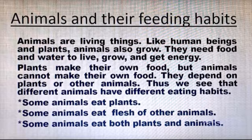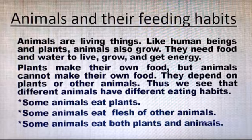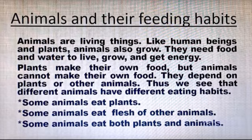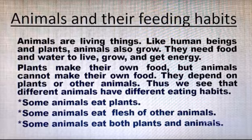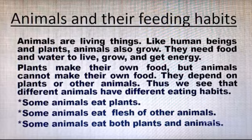Some animals eat plants, some animals eat the flesh of other animals, and some animals eat both plants and animals. Plants make their own food with the help of their leaves, and plants are very useful to everyone — to us as well as to animals. Animals need to search for their food and then eat it. In this lesson, we will learn how animals depend on plants and other animals.